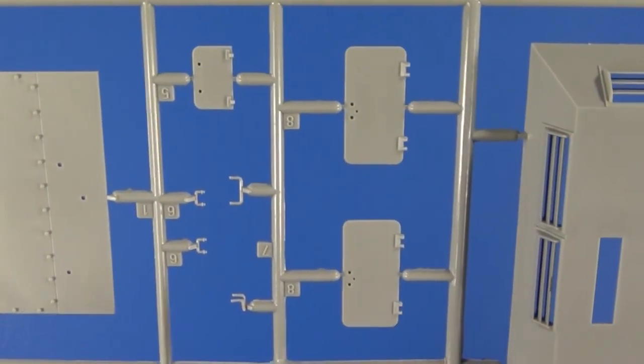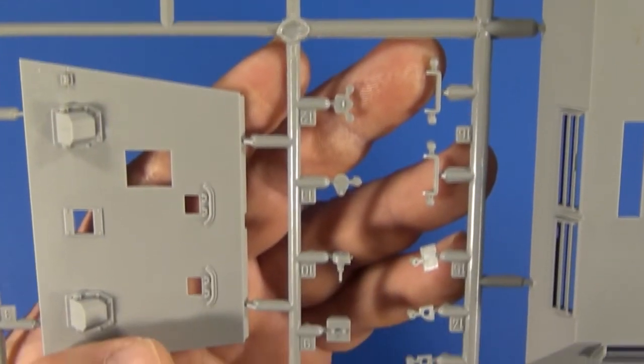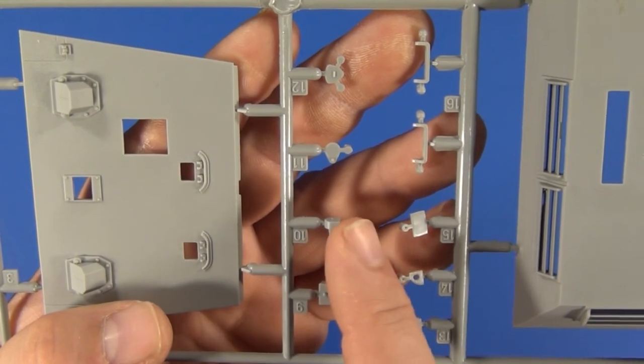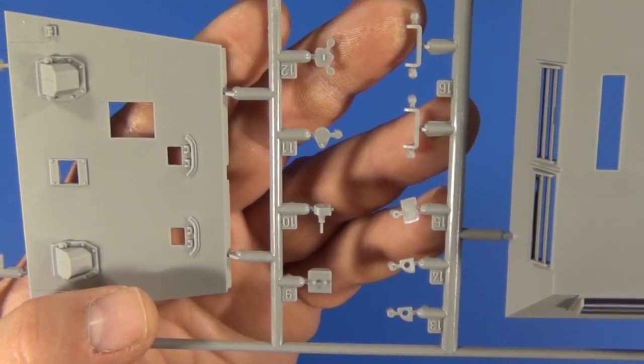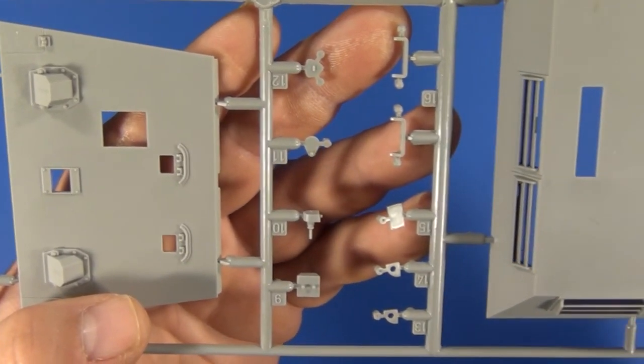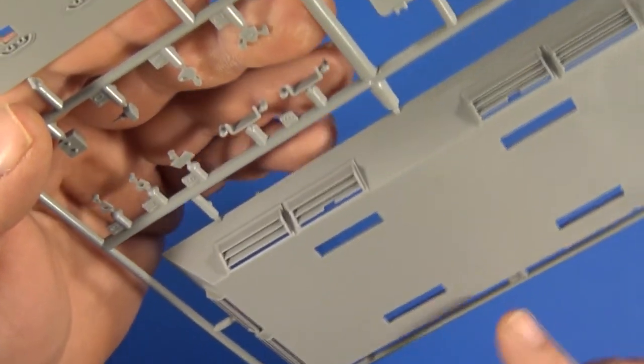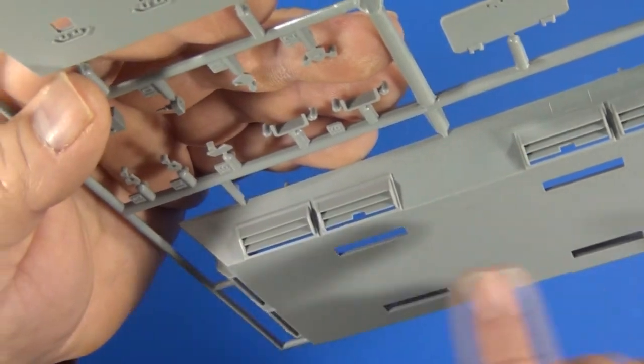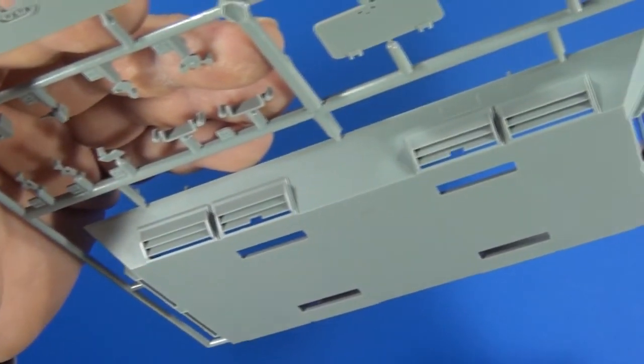These are the crew access doors. Some of the smaller bits - it's a pretty nice radio antenna mount there. And here's the lower half of the superstructure with vented louvers.